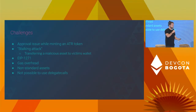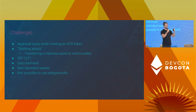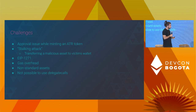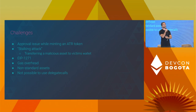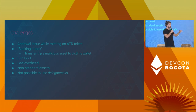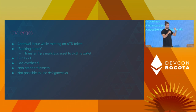Then we have challenges like EIP-1271, where the input of the function is basically just hash and signature, so we cannot enforce the rules if we don't know what is actually being verified. Then there is gas overhead — it's a contract wallet, so there will always be some gas overhead, plus there are a lot of checks for every execution. Then there are non-standard assets — we currently support just the standards and cannot support non-standard assets because we are enforcing the transfer rules. And finally, it's not possible to use delegate calls because that would alter the logic of the smart contract and allow you to transfer or do whatever you want with assets.